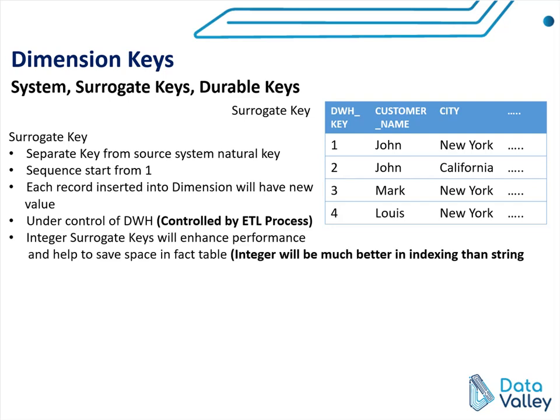An integer surrogate key will enhance performance. From a database perspective, indexing an integer key is much better than indexing a string key or a mixed characters-and-numbers key. As we saw in the previous lecture, some natural keys or source system keys may come as a mix between characters and numbers, which is not the optimal solution for performance. Integer sequence keys will help us make much better indexing and will improve performance.